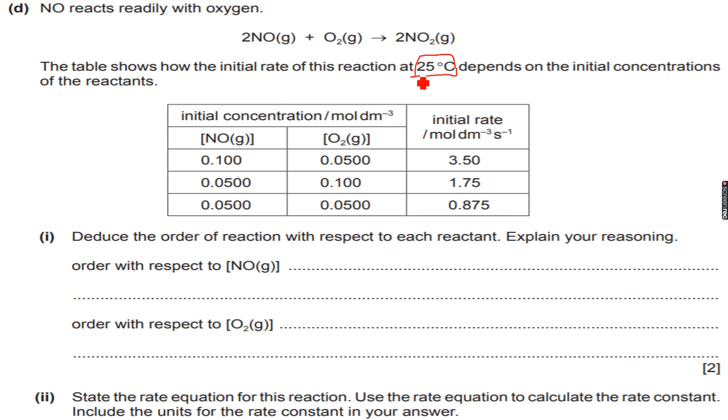Now, as you can see, they have mentioned the temperature, which means that we will use the rate constant k at this particular temperature. So deduce the order of reaction with respect to each reactant. Explain your reasoning. So let's write our general rate equation.